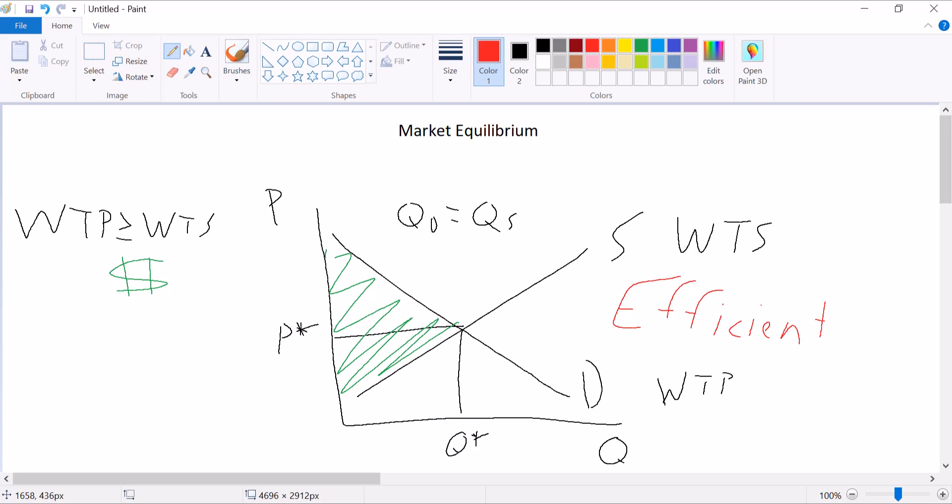So for instance, let's look at this portion of the demand curve. Those people have a low willingness to pay, either because of preference or because of budget constraints. But at the market price, buying the good at P-star is paying more than they're willing to pay. It will make them worse off. And so they won't do it.